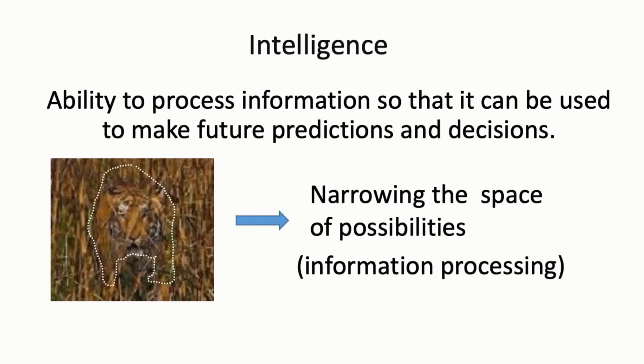In all these cases, no matter what level of description you're using for your space of possibilities, we're undergoing this process of information processing, which is carving out the smaller relevant possibility space from a very large space of possibilities. This is what I'm talking about when I say intelligence is information processing for predictions and decisions.